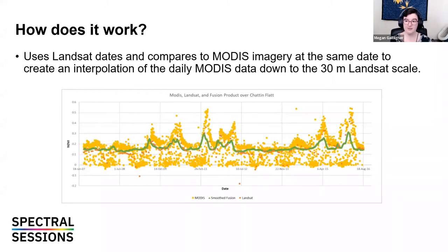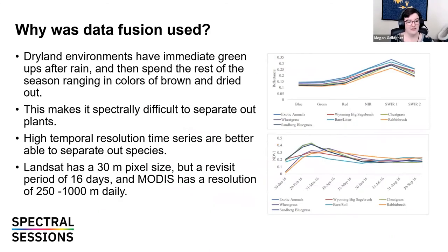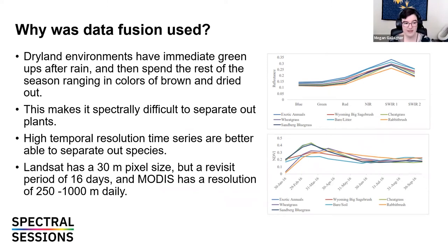The overall goal is to get MODIS dates at a Landsat-scale resolution to fill in the blanks we need. Dryland environments have immediate green-ups after rain and then spend most of the rest of the season in various shades of brown and dried out, making it spectrally very difficult to separate out these plants. High temporal resolution time series are actually much better able to separate out the different species we were working with.